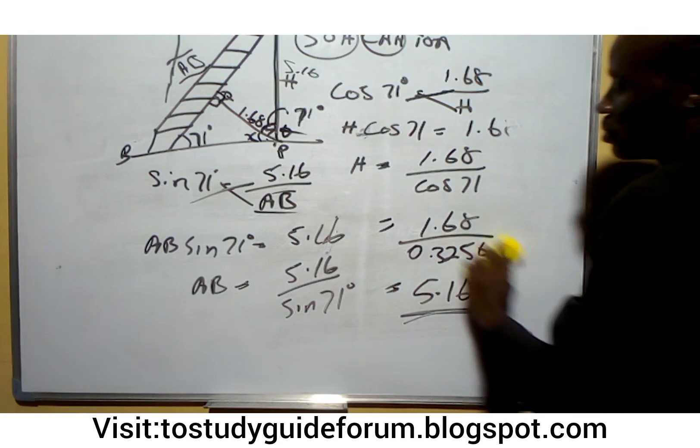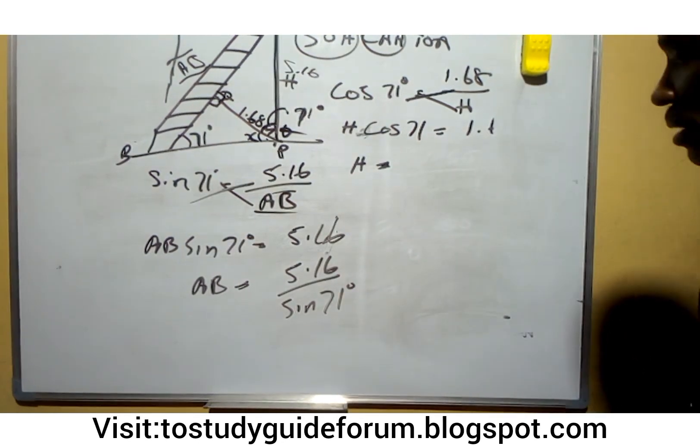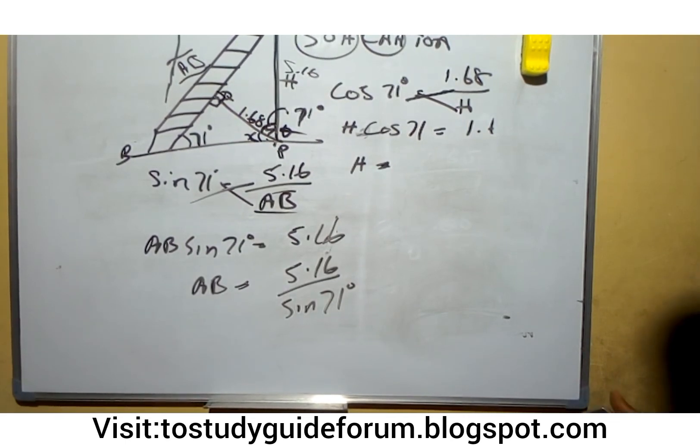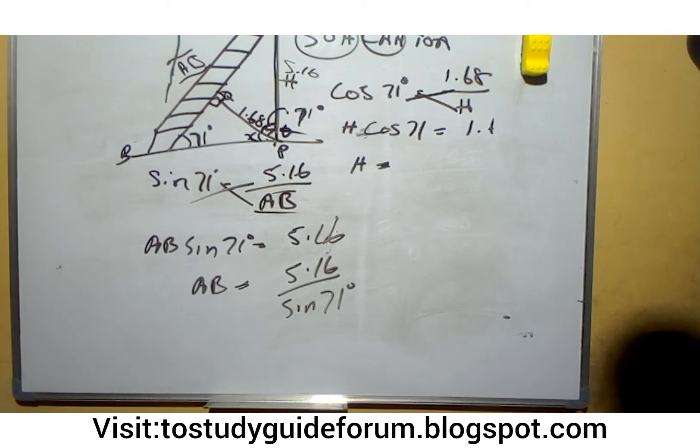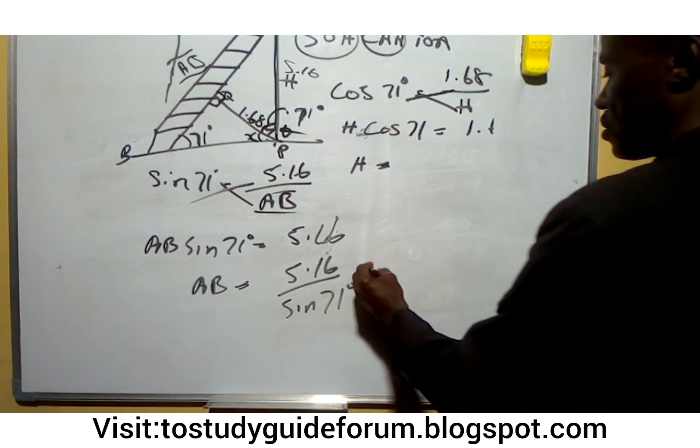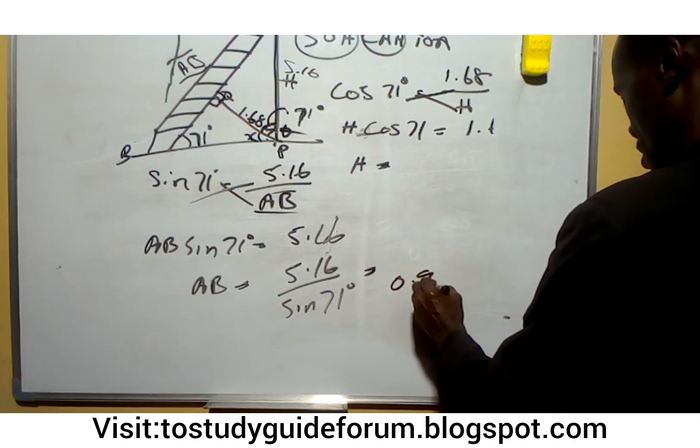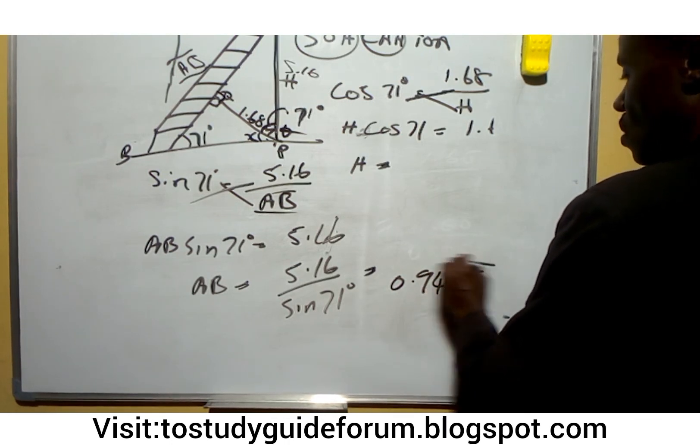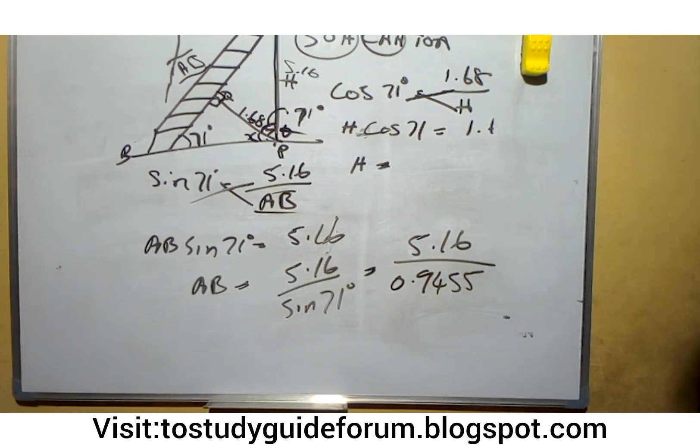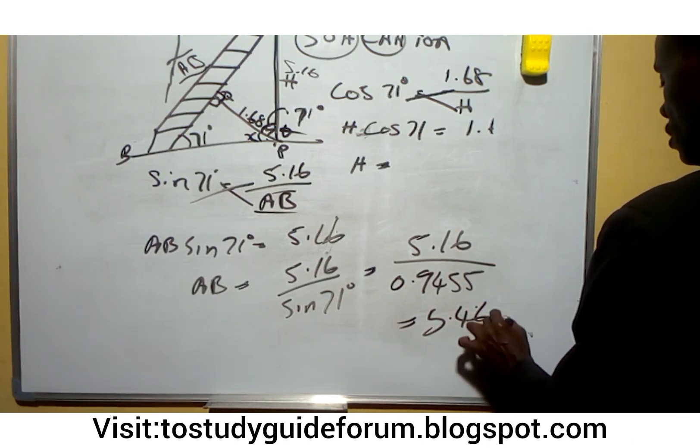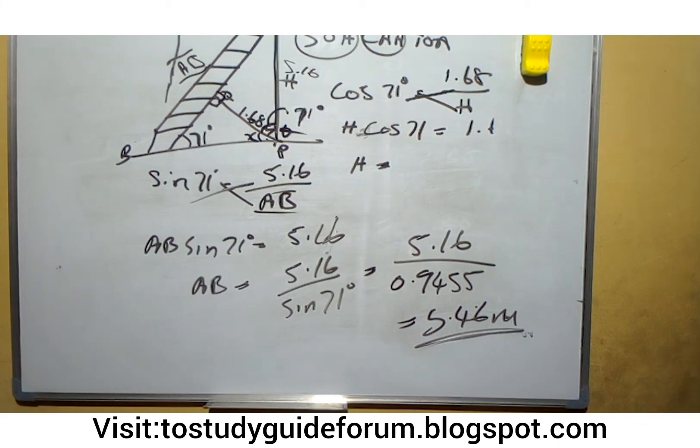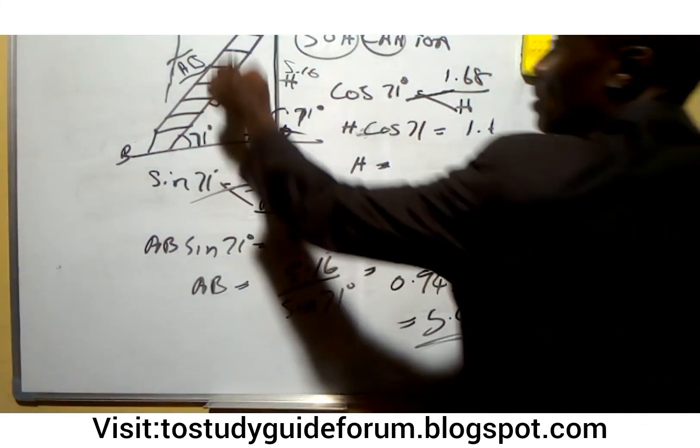The next thing we are doing here again is to use our device to get the value of sine 71. Sine 71 is 0.9455. So now if we divide 5.16 by 0.9455, our final answer will be 5.46 meters as the length of this ladder in question.